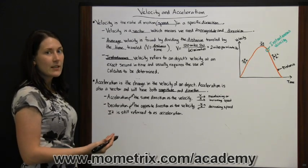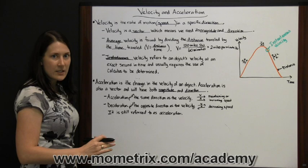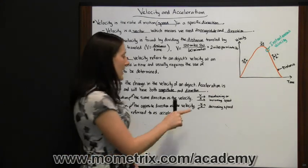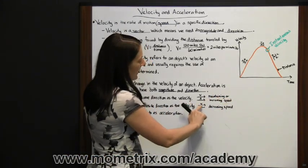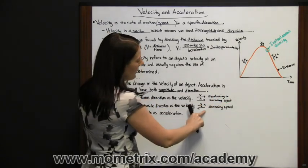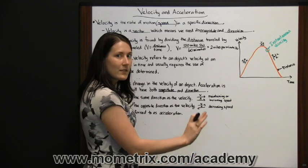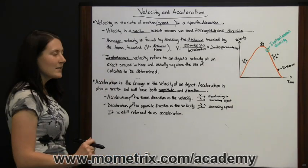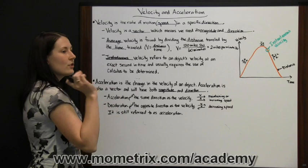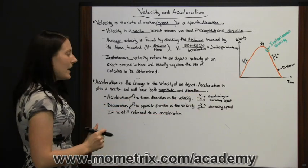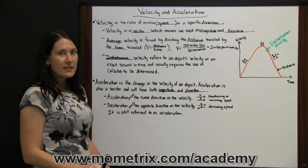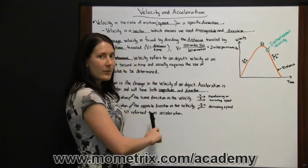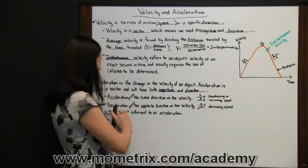Deceleration is another word for acceleration when you are losing speed, when your velocity is decreasing. Deceleration is going to point in the opposite direction as velocity. So if you are going in this direction but you are slowing down, velocity still points this way because you are still traveling this way, but your acceleration is decreasing. When you are decreasing speed, acceleration is going to go in the opposite direction of velocity. Deceleration is still referred to as acceleration because acceleration is a vector with magnitude and direction, so it points backwards opposite of velocity whenever you are decreasing speed.